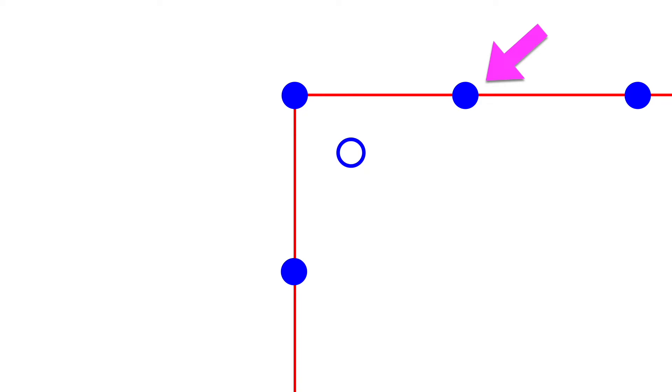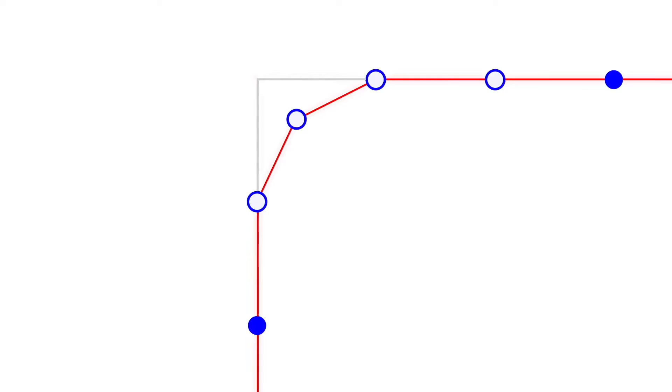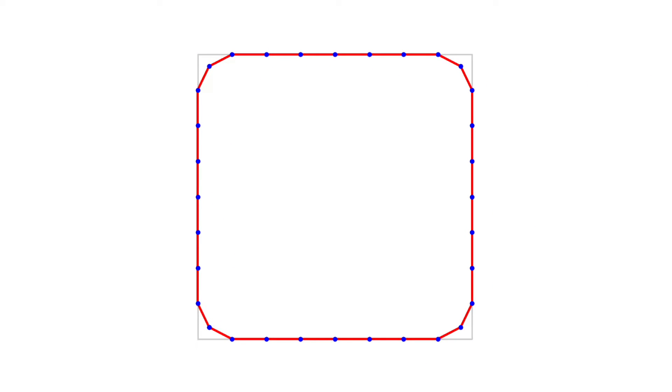But when you average this vertex with its neighbors, it stays in the same place. Let's apply this averaging step to all of the vertices. So now if we connect our new vertices together, we'll have a new shape. And if we repeat this averaging operation a couple times, we get our squircle.